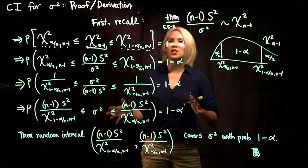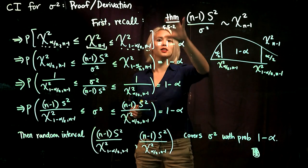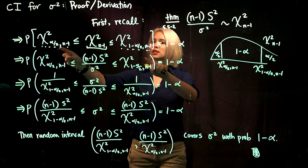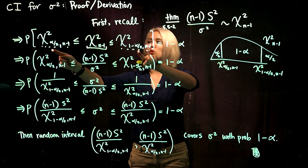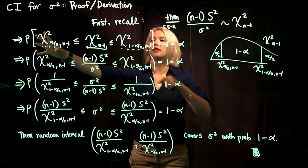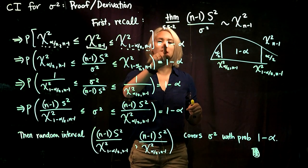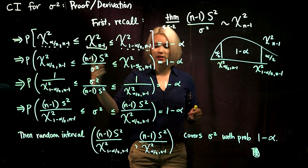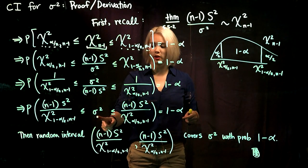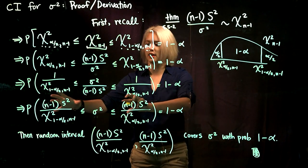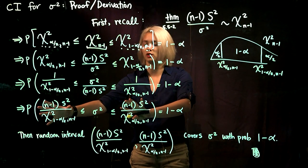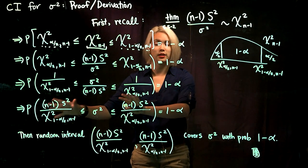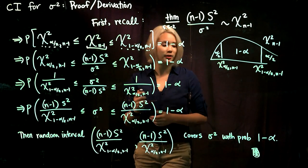To summarize, our general strategy is: start with the chi-squared theorem, select the quantiles so that the probability equals 1 minus alpha, rearrange so that we get sigma-squared in the middle, and then the two resulting expressions are the endpoints of our random confidence interval.